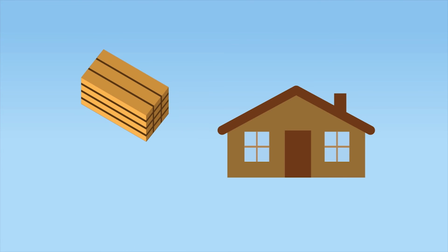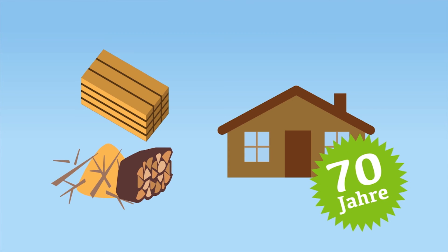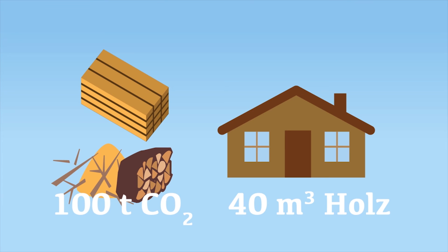The CO2 savings are significant, as is made very clear in the example of a modern wooden house. Construction of this wooden house generates enough by-products to heat the house for 70 years. If 40 cubic meters of wood are used in construction, burning the by-products generated will save 100 tons of CO2 compared to oil.